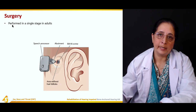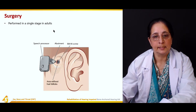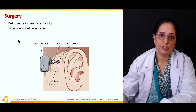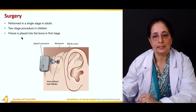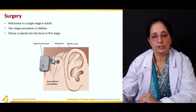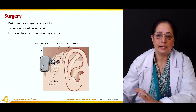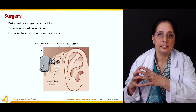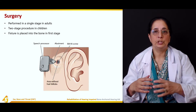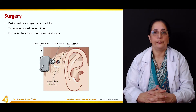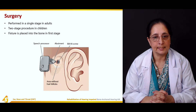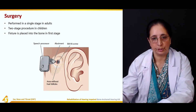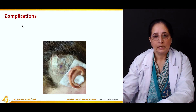In adults the procedure is performed in a single stage, while in children it is a two-stage procedure. In the first stage, the fixture is placed in the bone; then in the second stage the abutment and sound processor are attached. So children require two steps, while adults require only one.